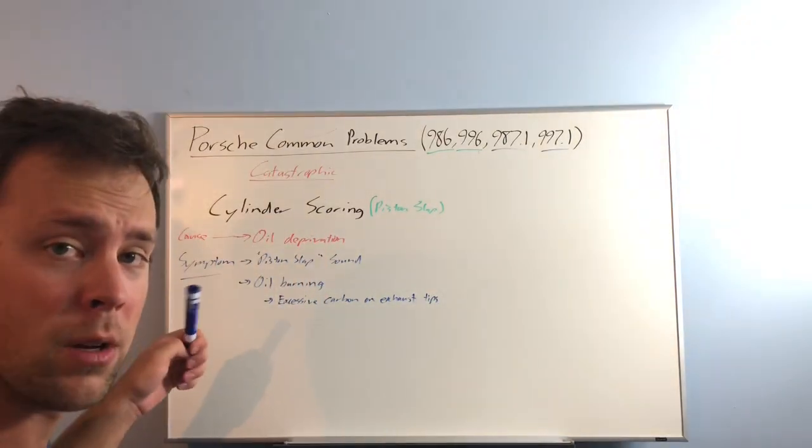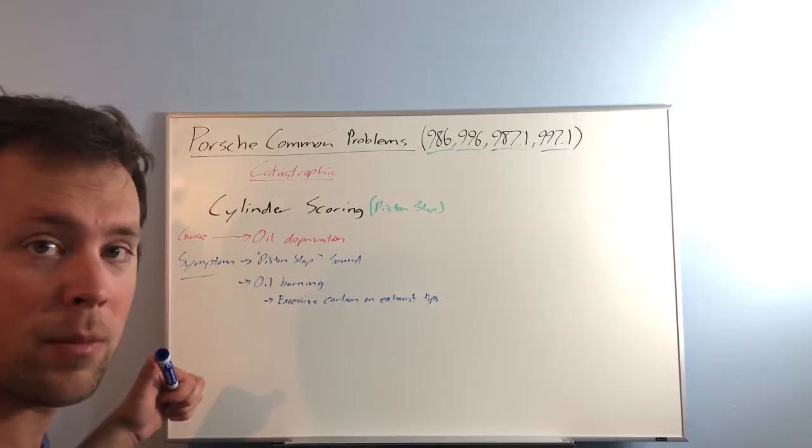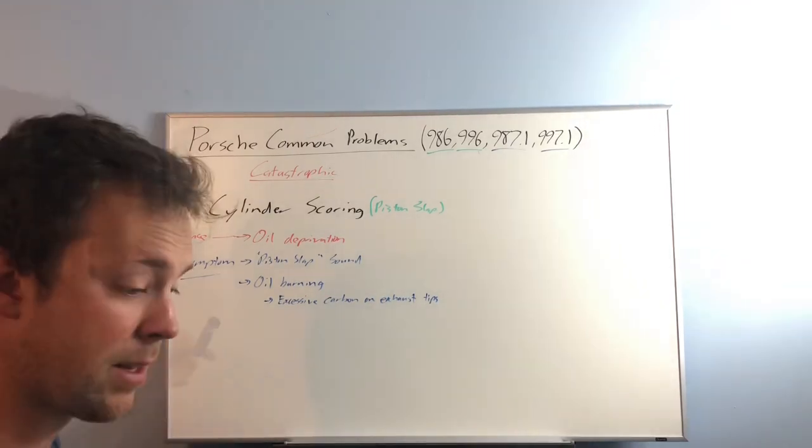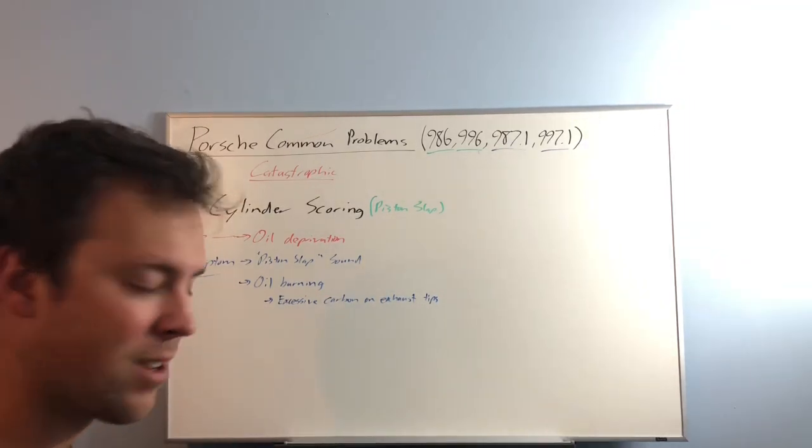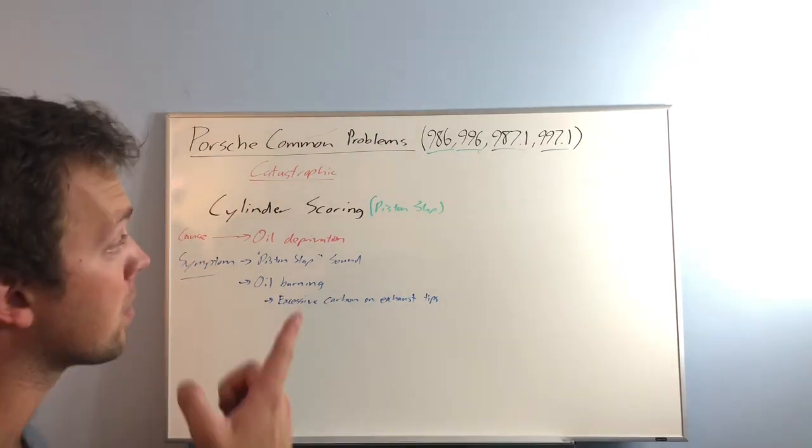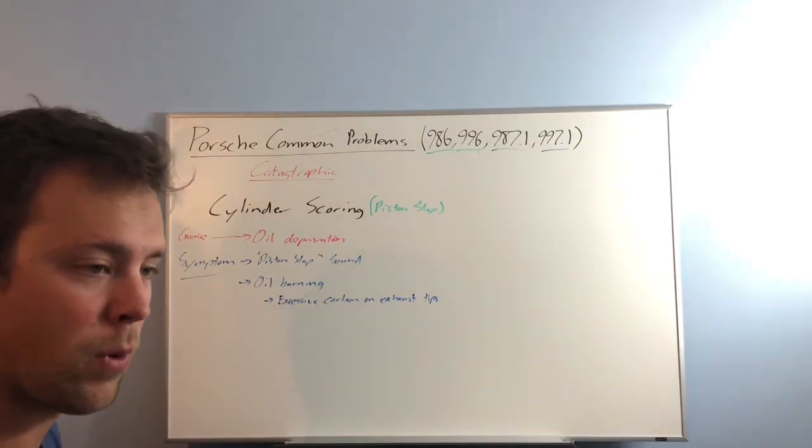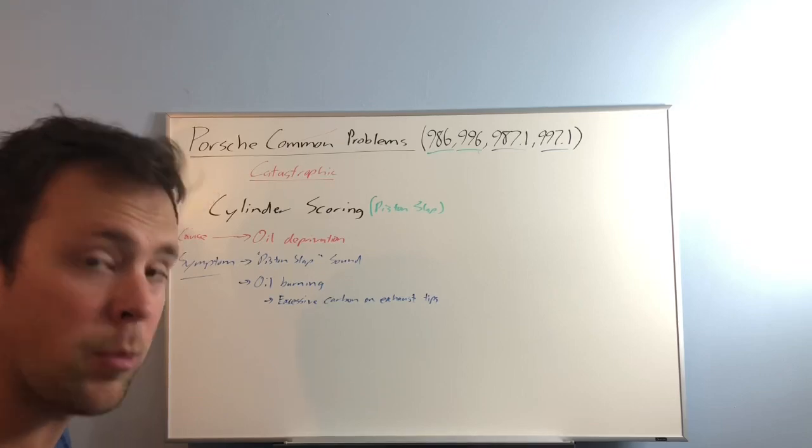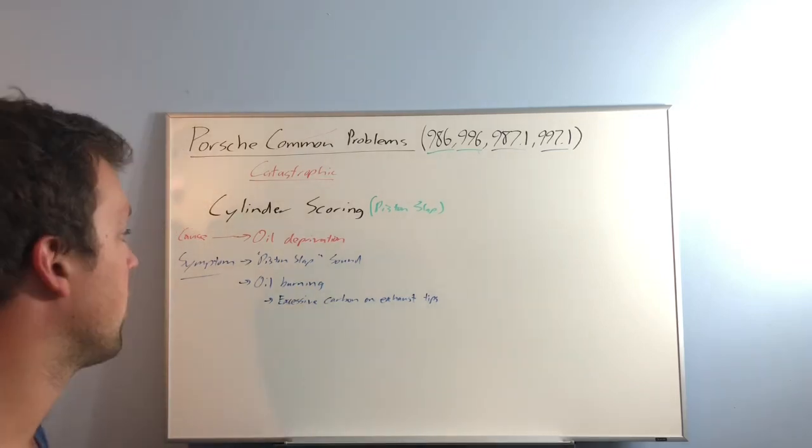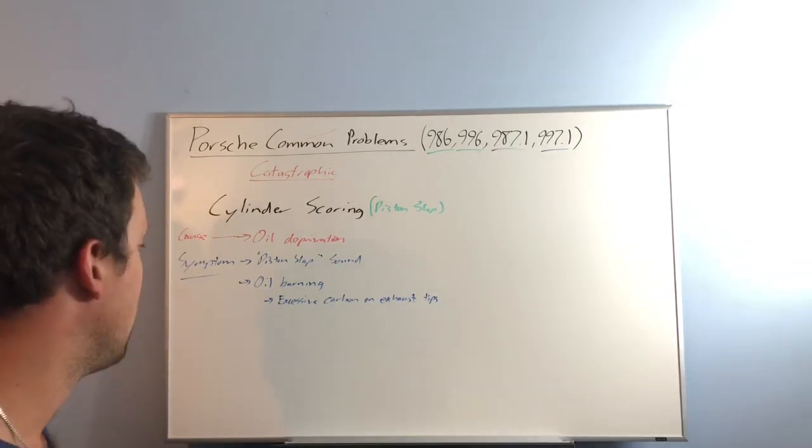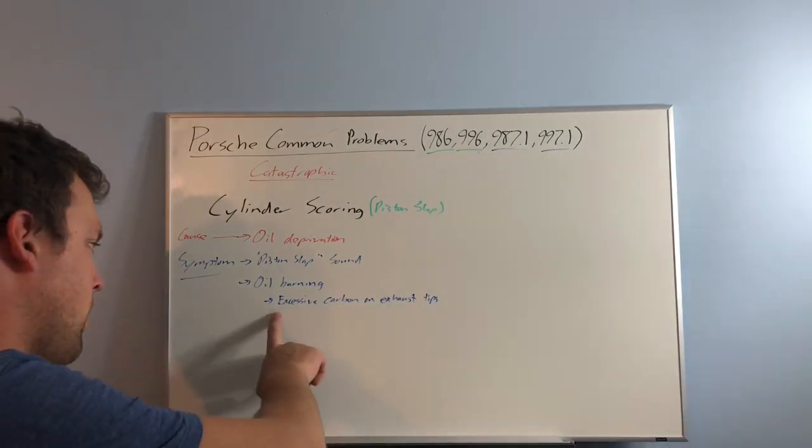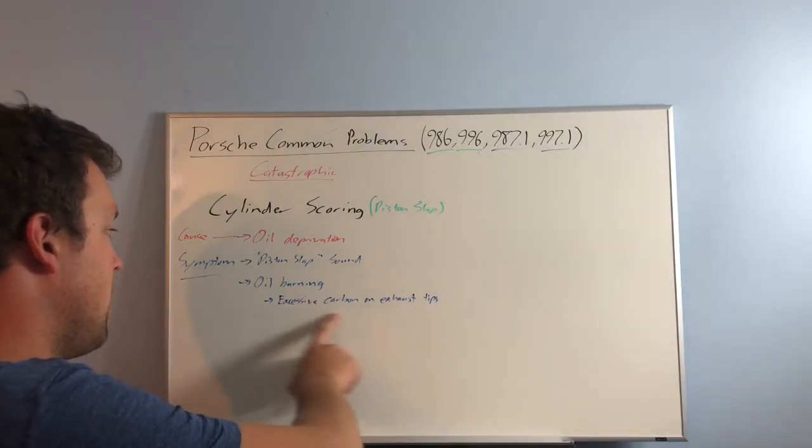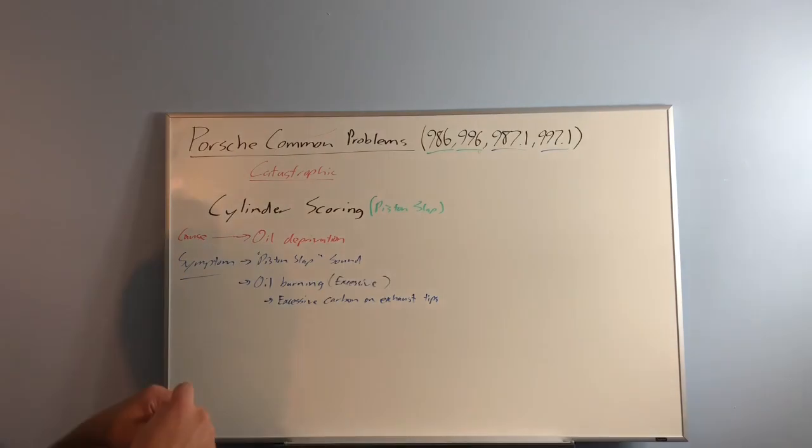Every Porsche, every engine burns some amount of oil. That doesn't mean you have cylinder scoring. In fact, if you look in your owner's manual of these cars, there is a spec for the acceptable amount of oil burning per distance. So one way to note any sort of excessive oil burning is you can see excessive carbon buildup on your exhaust tips.